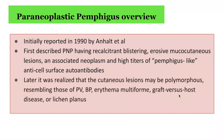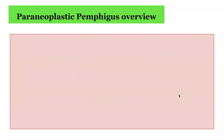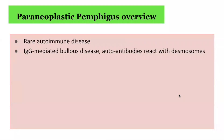It was later realised that the cutaneous lesions can be polymorphous, meaning they can have different morphologies, resembling those of Pemphigus vulgaris, Bullous pemphigoid, erythema multiforme, graft-versus-host disease, or lichen planus. It is a rare autoimmune disease, which is IgG-mediated bullous disease, with autoantibodies that react with components of predominantly the desmosomes.